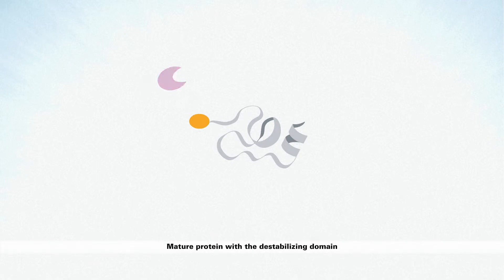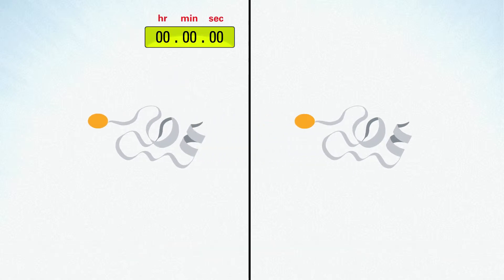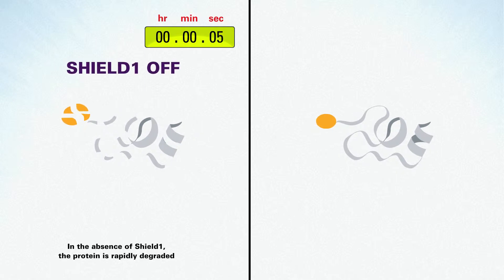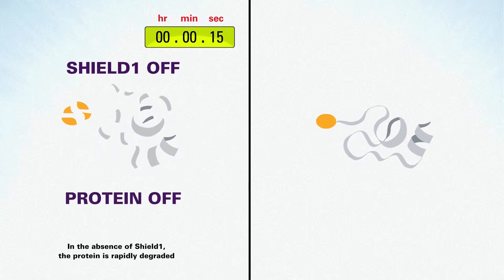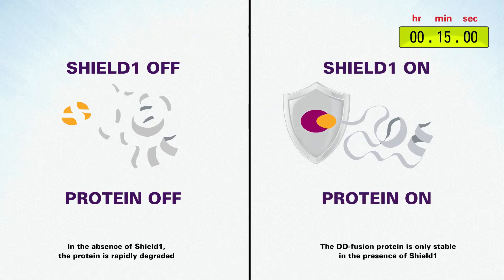The fate of the DD fusion protein depends on the presence or absence of the membrane permeant small molecule SHIELD1. The DD domain targets the fusion protein rapidly to the proteasomes, leading to its fast degradation. In the presence of SHIELD1, the DD domain is shielded and no longer targets the protein to the proteasome, so the protein accumulates rapidly in the cell.